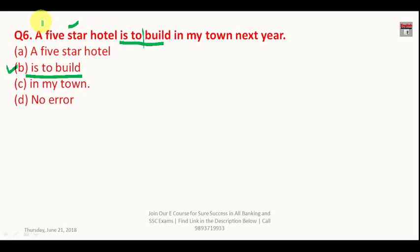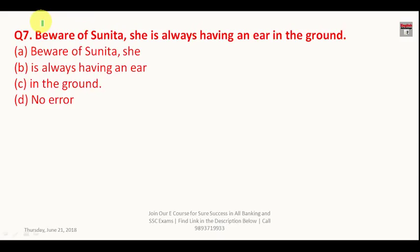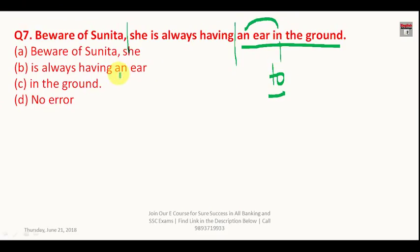Question number seven: 'Beware of Sunita, she is always having an ear in the ground.' Up to 'she is always having,' the sentence is correct. However, the correct idiom is 'an ear to the ground,' not 'an ear in the ground.' You have to replace 'in' with 'to.' 'An ear to the ground' means to be aware of or alert about something. The answer is C.